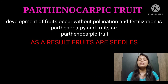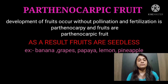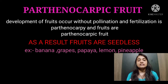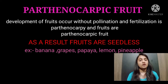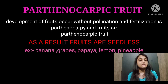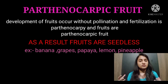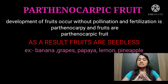The speciality of parthenocarpic fruits is that there are no seeds in them. Examples include banana, grapes, lemon, and orange. If you eat a banana, you will not get seeds because it is parthenocarpic. In modern times, there are also some parthenocarpic oranges. So parthenocarpic fruits are developed without fertilization, and seeds are totally absent in these fruits.